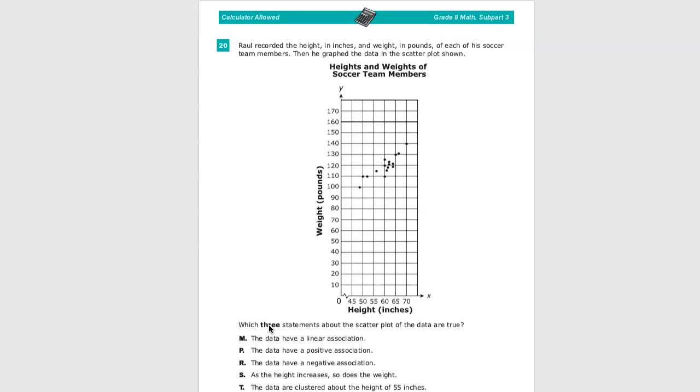M says the data has a linear association, which would mean it would be a line. Not that far off, to be honest.